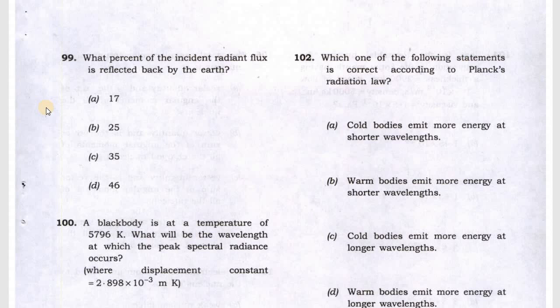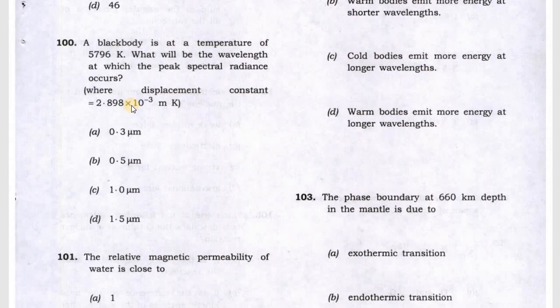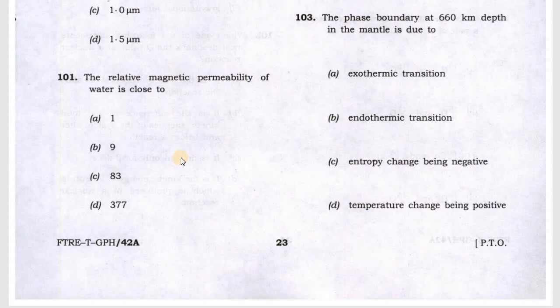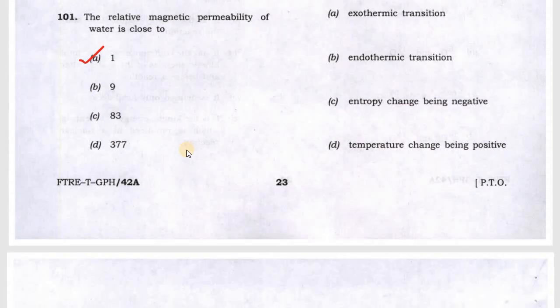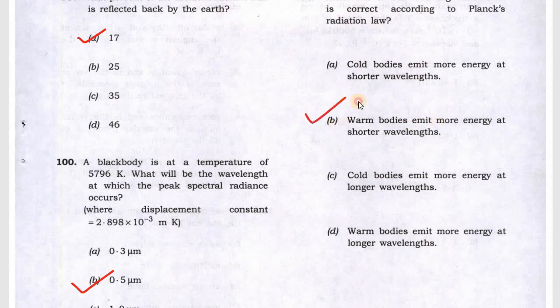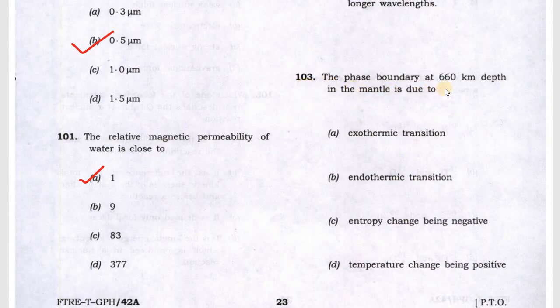Question 99 will be A. Question 100 will be B. Question 101 asks about relative magnetic permeability of water, which is close to 1, so D. Question 102 is Planck radiation law. Answer is B: warmer bodies emit more energy at shorter wavelengths. The phase boundary at 660 kilometers is endothermic transition.